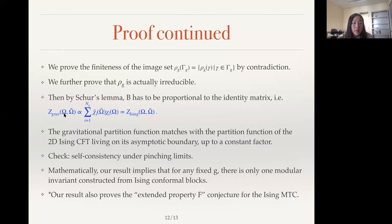So we can check that this passes all the self-consistency conditions. And mathematically, this proof implies that for any fixed genus G, there's only one modular invariant that can be constructed from Ising conformal blocks, up to a constant prefactor. And also our result proves what is called extended property F conjecture from the Ising modular category. The extended property F basically says that the image of the mapping class group is finite. So previously I mentioned that the tricritical Ising case worked for genus one. There are finite terms in the sum, and they sum to 48 times z of tricritical Ising CFT partition function. But for higher genus, it does not work anymore. The physical argument still follows, but the problem is the modular sum is no longer finite.